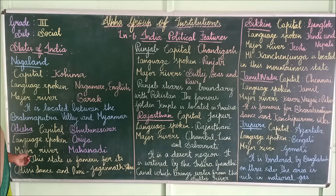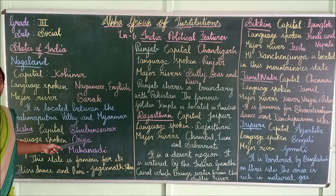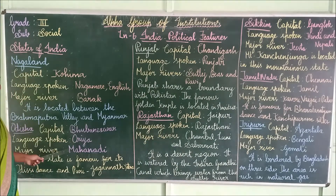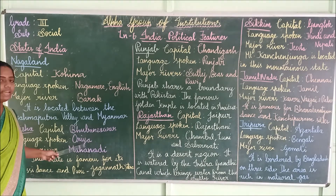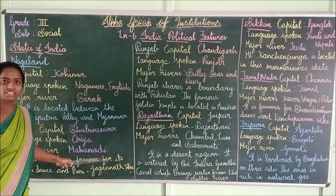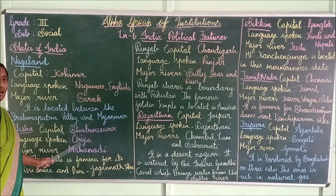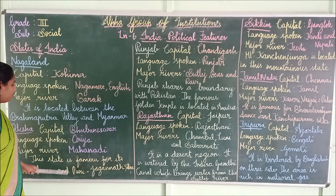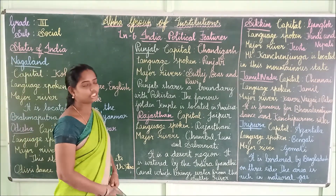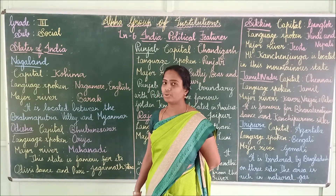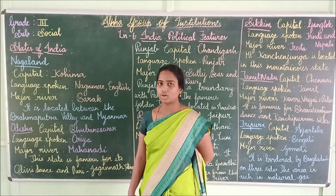The next state is Odisha, spelled O-D-I-S-H-A. Its capital is Bhubaneshwar, spelled B-H-U-B-A-N-E-S-W-A-R. The language spoken is Oriya, and the major river is Mahanadi. Odisha is famous for Odissi dance and the Puri Jagannath Jatra festival.